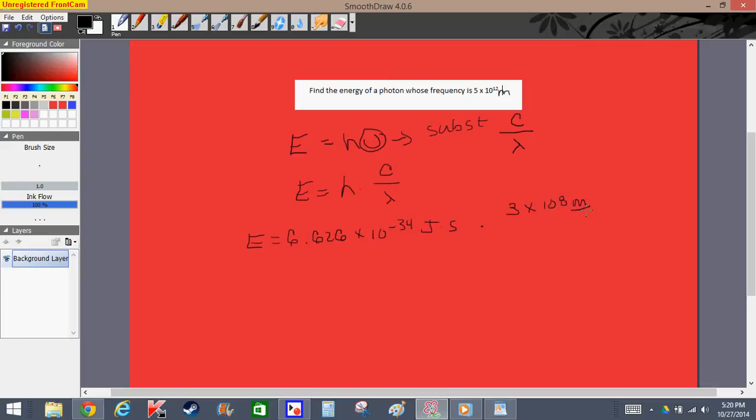This is already very convenient because we have frequency in terms of meters and the speed of light in terms of meters per second. Now we divide by the frequency, which is 5 times 10 to the 12th.